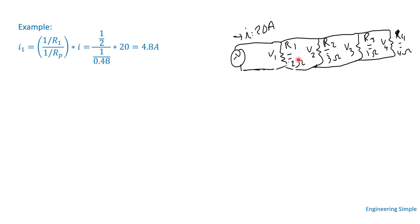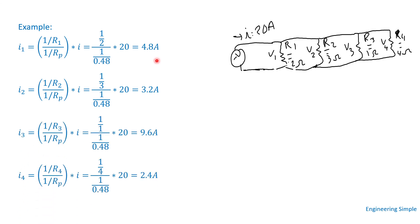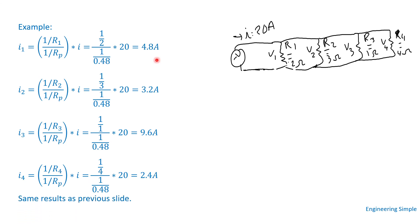Applying the current divider to the same example: I1 equals (1/R1) / (1/Rp) times I equals (1/2) / (1/0.48) times 20 amps, which gives 4.8 amps — the same result as before. We do the same calculation for I2, I3, and I4, and we get the same results as in the previous calculation.